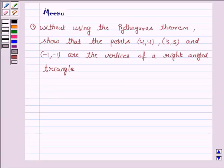Hello and welcome to the session. Let us discuss the following question. Without using the Pythagoras theorem, show that the points (4,4), (3,5), and (-1,-1) are the vertices of a right-angled triangle.